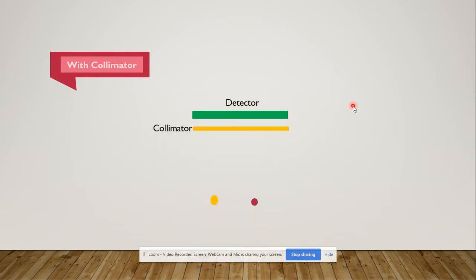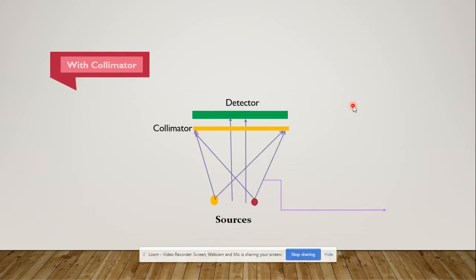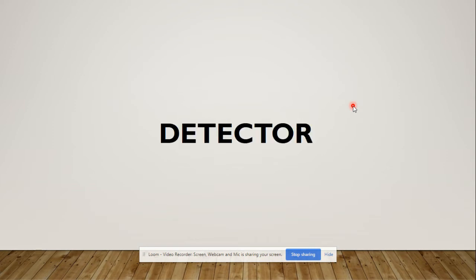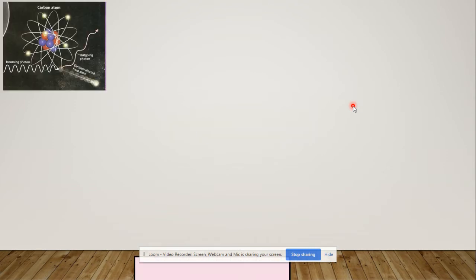In actual practice, we use a collimator placed before the detector. The radiation from the source first goes towards the collimator, then moves towards the detector. The radiations that are non-parallel to the detector are absorbed by the collimator, and only the radiations parallel to the collimator get the chance to move towards the detector. This makes the image clearer and more desirable.